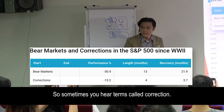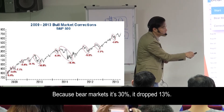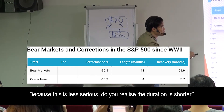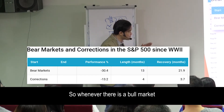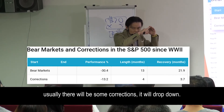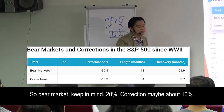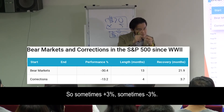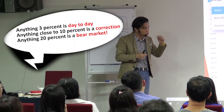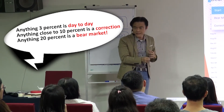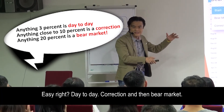You'll also hear the term correction. Corrections happen more often than bear markets, and bear markets are more serious because they drop around 30%, while a correction drops about 10%. Because a correction is less serious, the duration is shorter and recovery is also shorter. During a bull market there are usually some corrections — it drops down, goes up a bit, drops down again. Bear market is about 20%, correction is about 10%, and day-to-day fluctuation is about 3%. Anything close to 10% is a correction; 20% or more is a bear market.